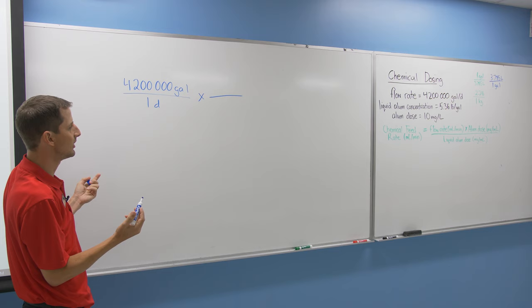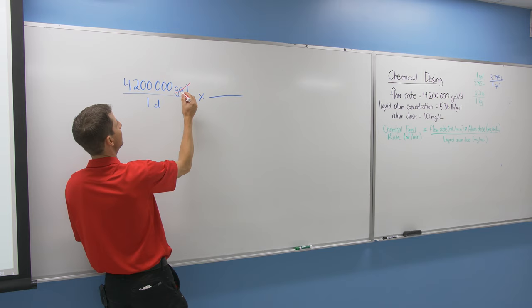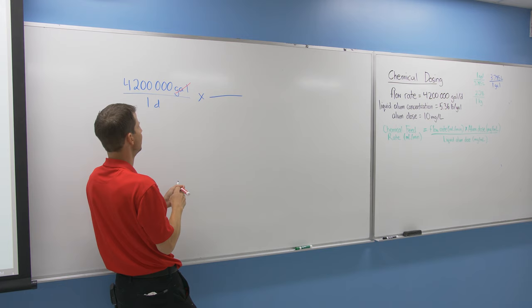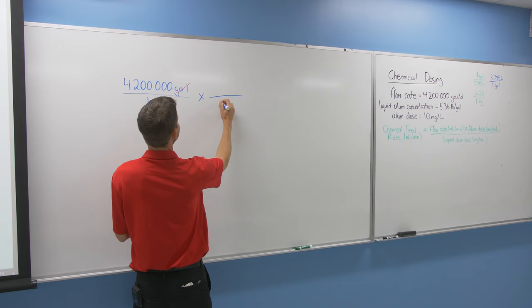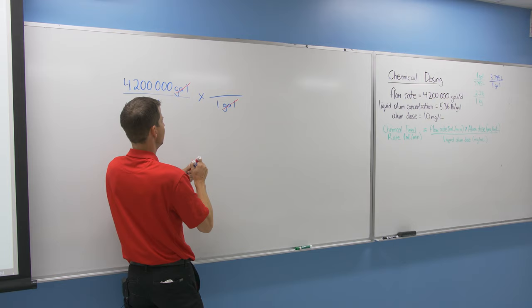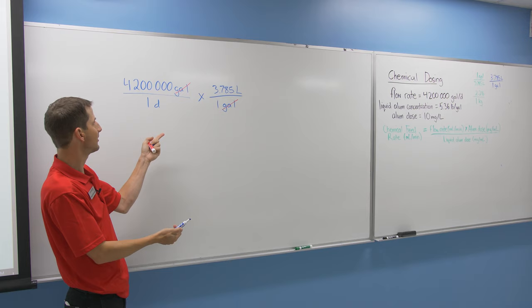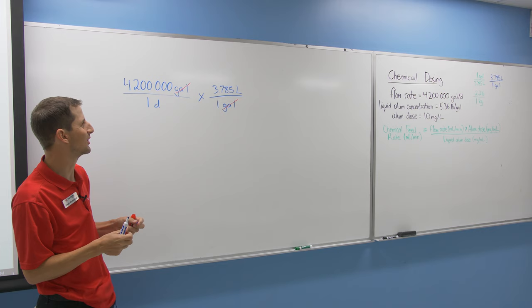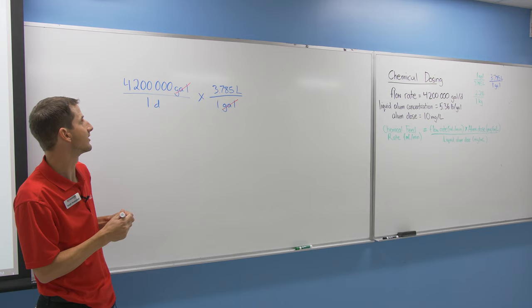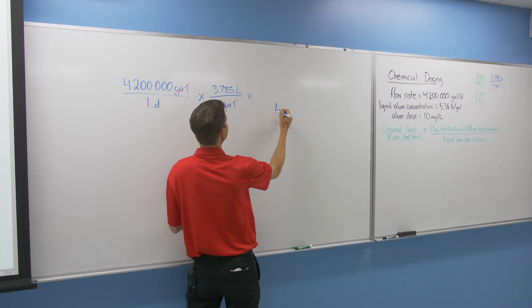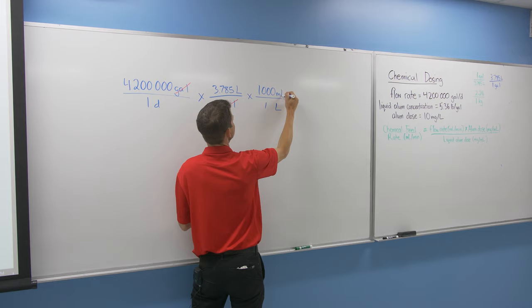We'll use that conversion factor: one gallon on the bottom so we can cancel those units, and 3.785 liters on top. Now after this conversion, we'll have liters per day, but we still need to go from liters to milliliters. That's an easy one. Liters are on top, so liters need to go on the bottom. One liter has 1000 milliliters. Notice I'm not doing any math yet—I'm just putting a string of conversion factors using dimensional analysis until we end up with the units we want.